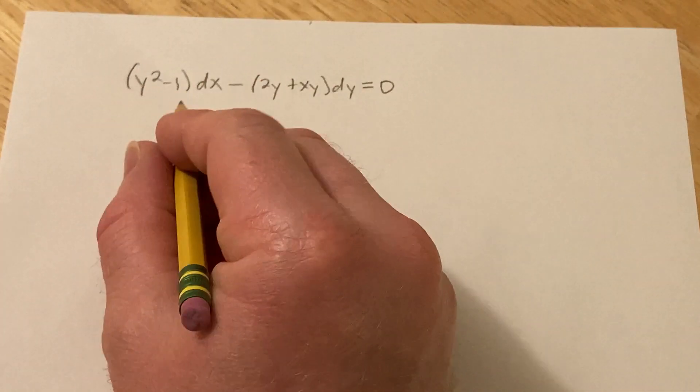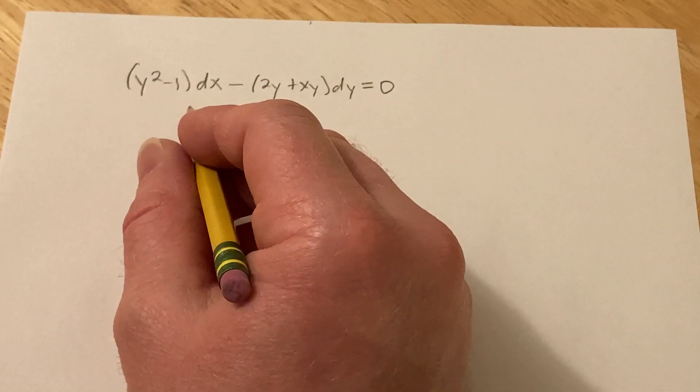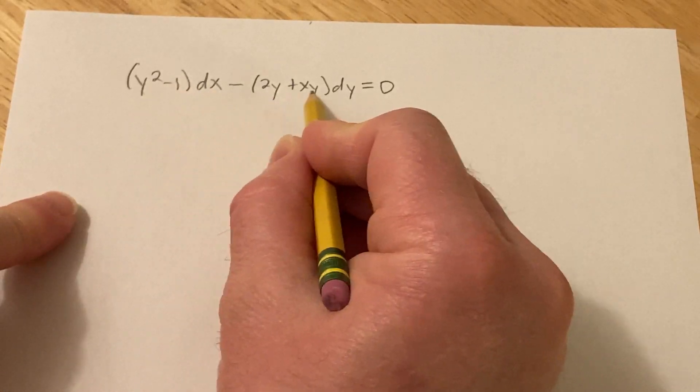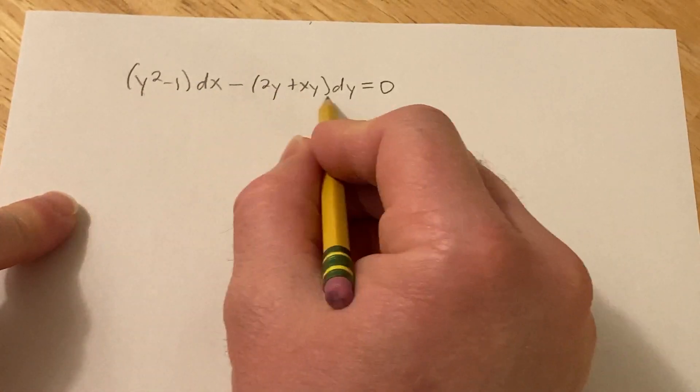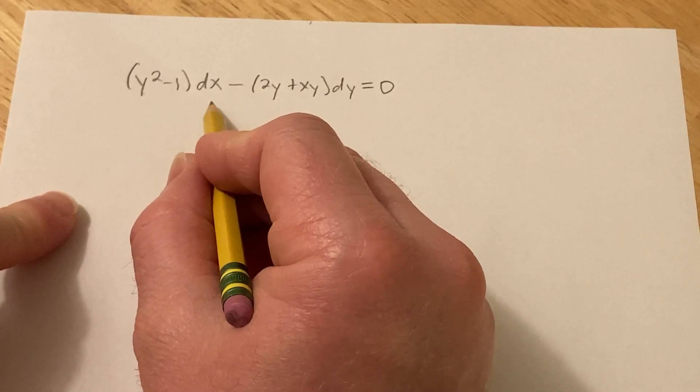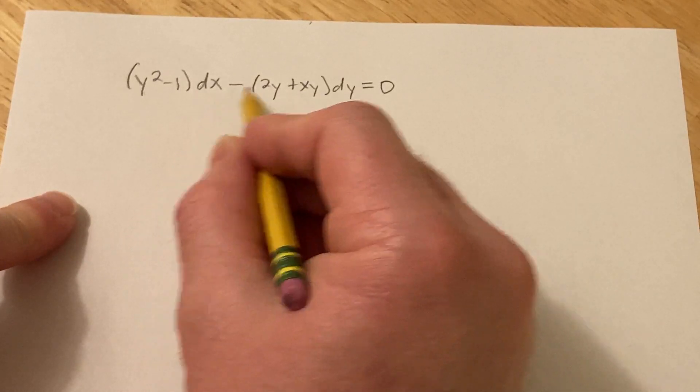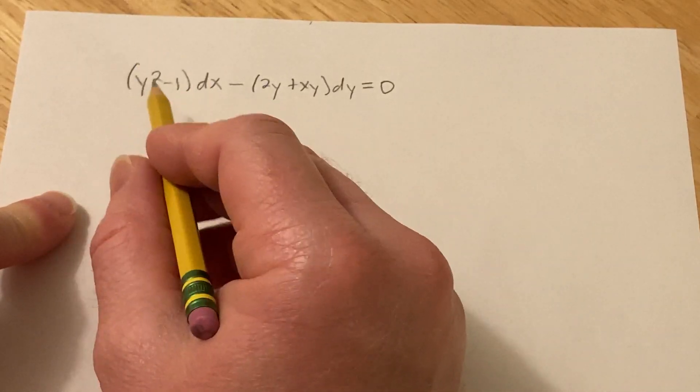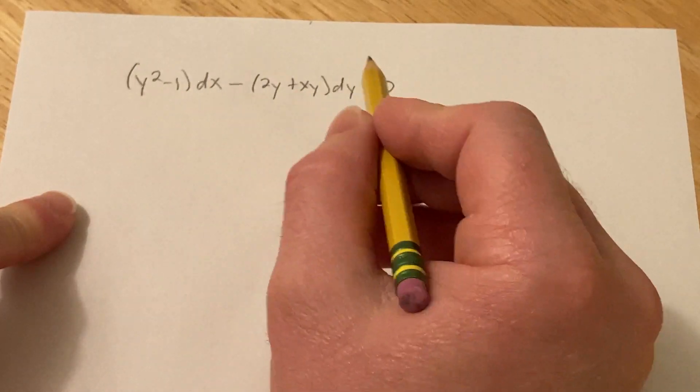Hi, in this video we're going to try to solve this differential equation. So we have y squared minus 1 dx minus 2y plus xy dy. So it looks like this differential equation is probably going to be separable, so what we want to do is we want to get all of the x's on one side with the dx and all the y's on one side with the dy.